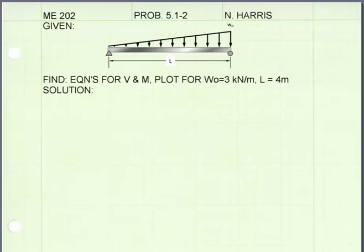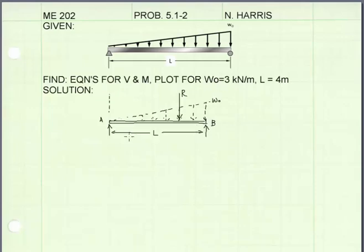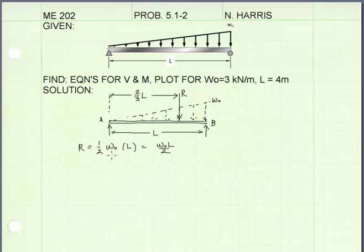The first step to finding equations for shear and moment is to draw a free body diagram of the beam. I've drawn a free body diagram with the supports at A and B replaced with vertical reaction forces, and I've shown the resultant force for the distributed load applied on the beam. That resultant force is located at a distance of two-thirds times the length from the left side. The magnitude of that resultant force is just the area under the triangular distributed load: one-half times the height W naught times the base L, giving W naught times L over 2.